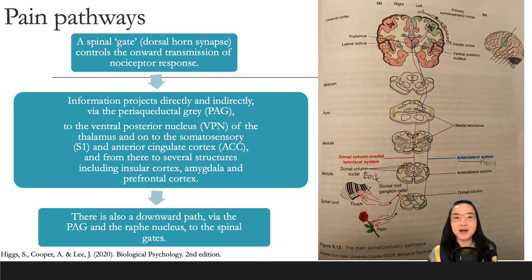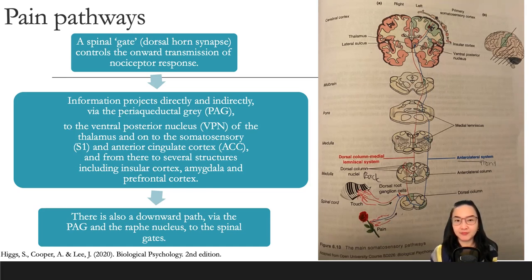Pain pathways. A spinal gate in the dorsal horn synapse controls the onward transmission of nociceptor responses. The signal travels via the ventral posterior nucleus (VPN) of the thalamus, and on to the somatosensory cortex S1 and the anterior cingulate cortex (ACC), and from there to several structures including the insular cortex, amygdala, and prefrontal cortex.